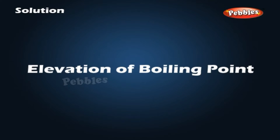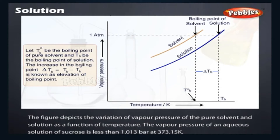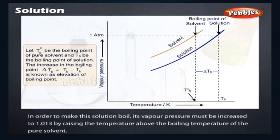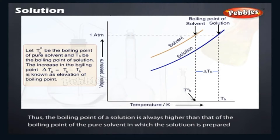Elevation of boiling point: The figure depicts the variation of vapor pressure of the pure solvent and solution as a function of temperature. The vapor pressure of an aqueous solution of sucrose is less than 1.013 bar at 373.15 K. In order to make this solution boil, its vapor pressure must be increased to 1.013 bar by raising the temperature above the boiling temperature of the pure solvent. Thus, the boiling point of a solution is always higher than that of the pure solvent in which the solution is prepared.